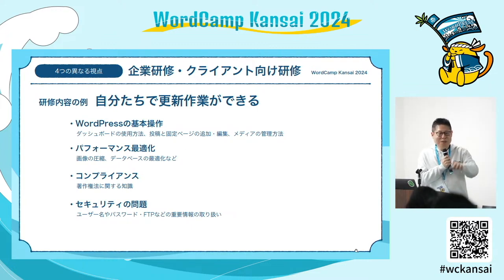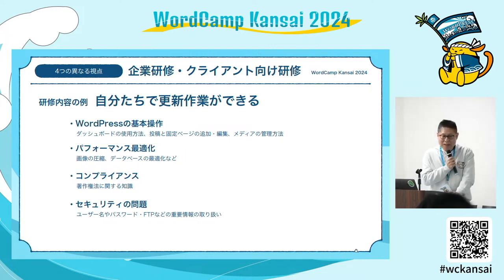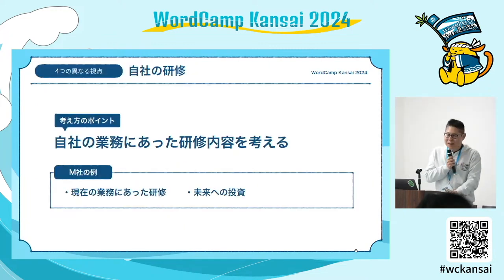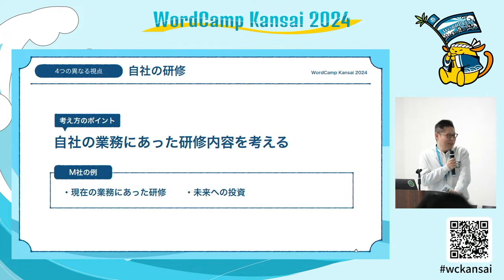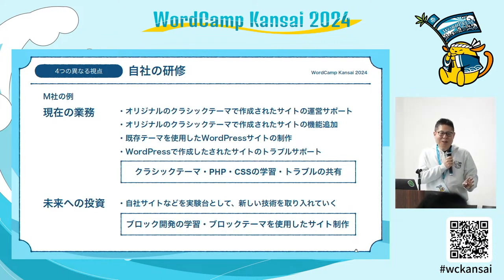意外と忘れがちなのがサーバーとドメインの更新で、忘れちゃったというお客さんが結構いらっしゃいます。あとコンプライアンス・著作権——Googleの画像検索から勝手に画像を取ってきてアップするとか、人の顔が写っているものをそのままアップロードするとか——そういったところのお話もしっかりとしていかないといけません。今度は自社の研修です。各社それぞれというところではありますが、例えば私の会社の例として——アシスタントと私の2人のちっちゃい会社なんですが。